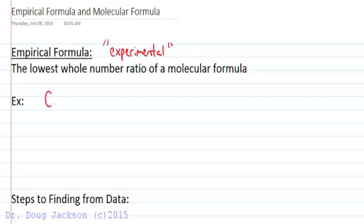For example, if we take ethane, C2H6, is the molecular formula, but the lowest whole number ratio divides by two to make CH3 the empirical formula. The one is understood there, so CH3 divided by two.